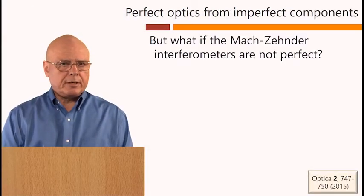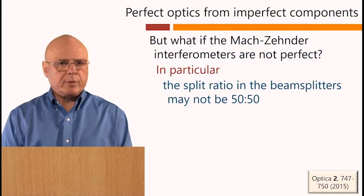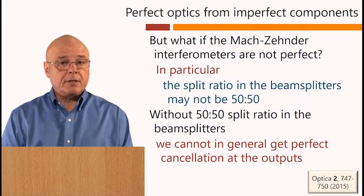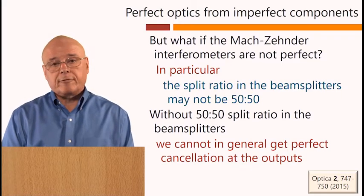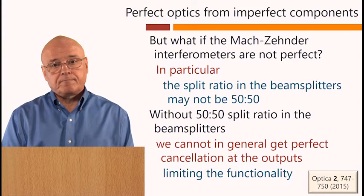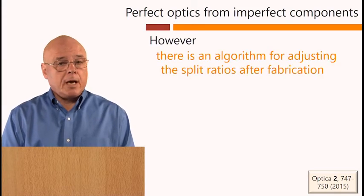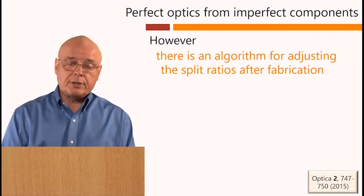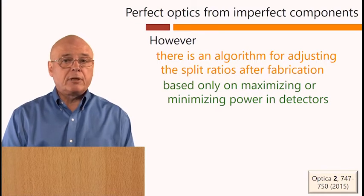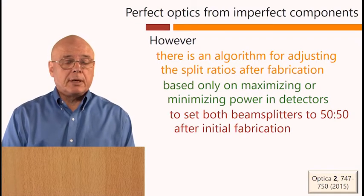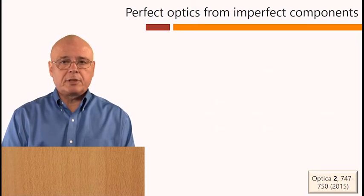But what if the Mach-Zehnder interferometers are not perfect? In particular, the split ratio in the beam splitters may not be 50-50. Without 50-50 split ratio in the beam splitters, we cannot in general get perfect cancellation at the outputs. And that limits the functionality. However, there is an algorithm for adjusting the split ratios after fabrication, based only on maximizing or minimizing power in detectors. And that can set both beam splitters to 50-50 after initial fabrication.